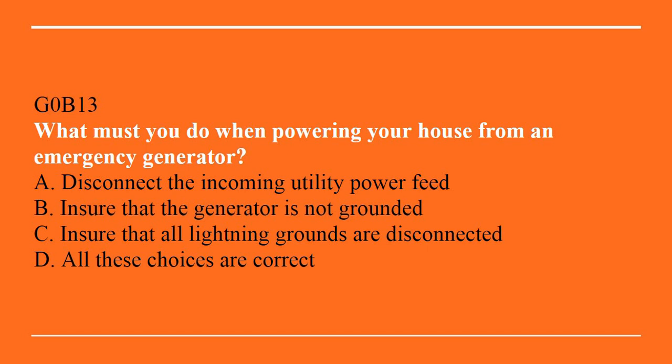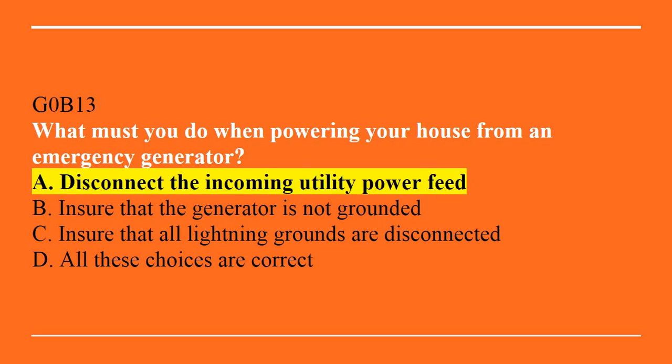G0B13: What must you do when powering your house from an emergency generator? A, disconnect the incoming utility power feed. B, ensure that the generator is not grounded. C, ensure that all lightning grounds are disconnected. Or D, all of these choices are correct. Correct answer is A — disconnect the incoming utility power feed.